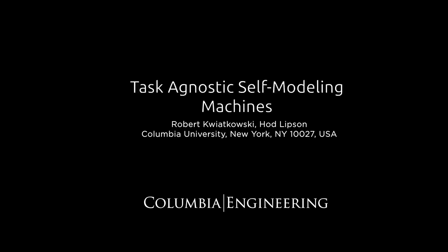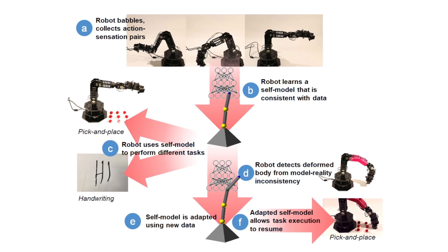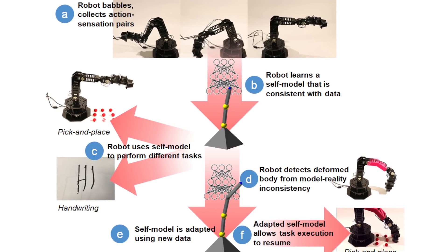In this paper, we study the ability of a robot to auto-generate its own self-model. We will show how a robot can model its entire forward kinematics without any prior knowledge or assumptions about physics, geometry, or motor dynamics.